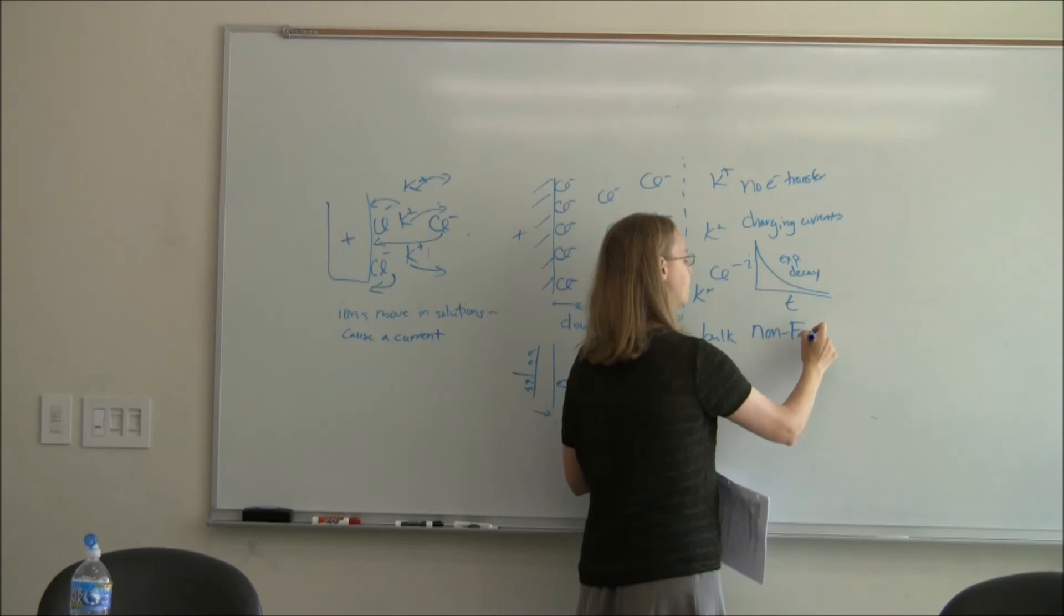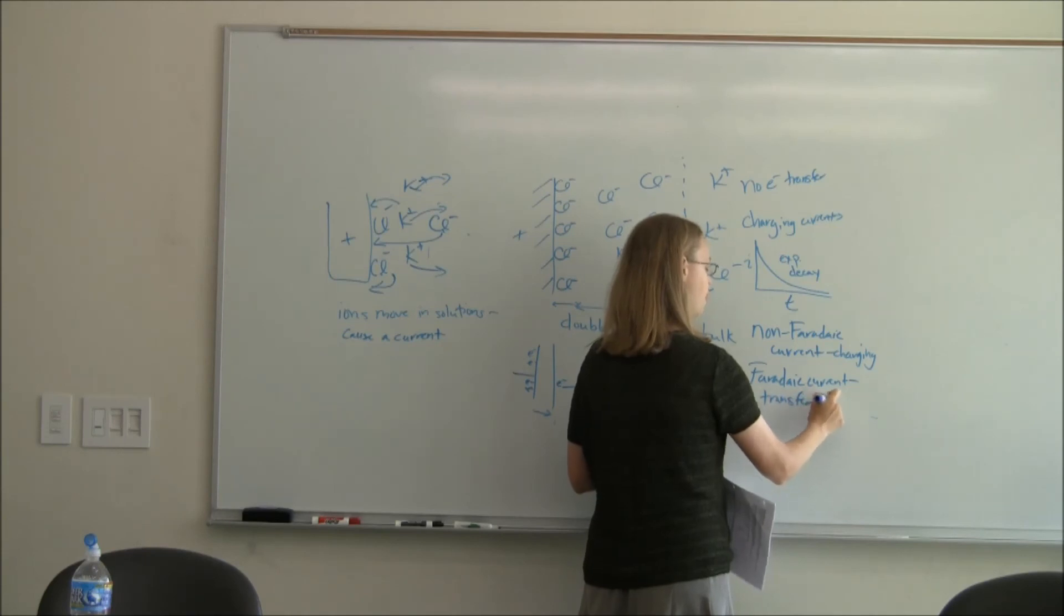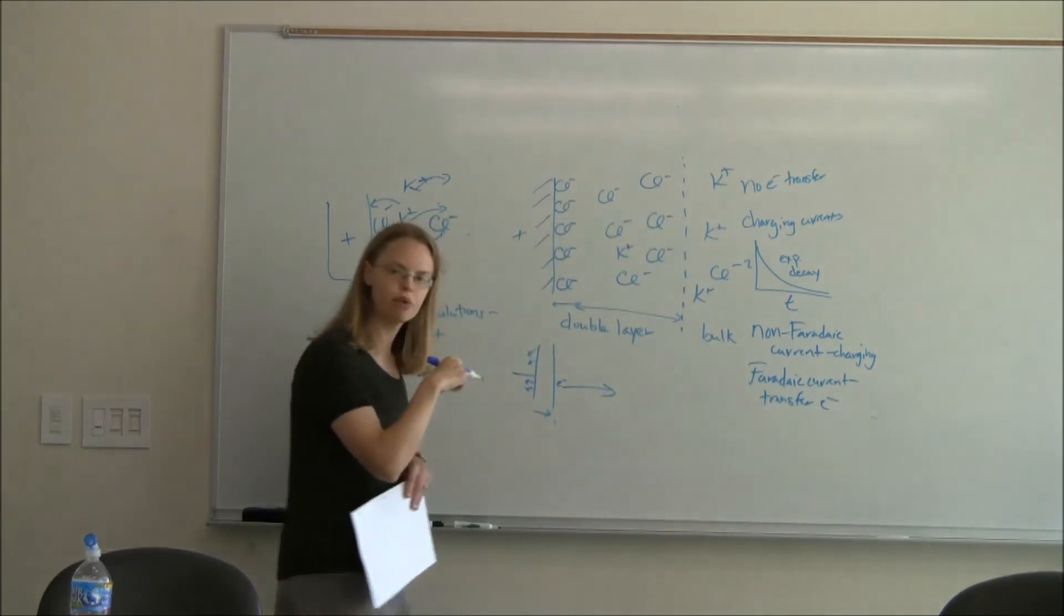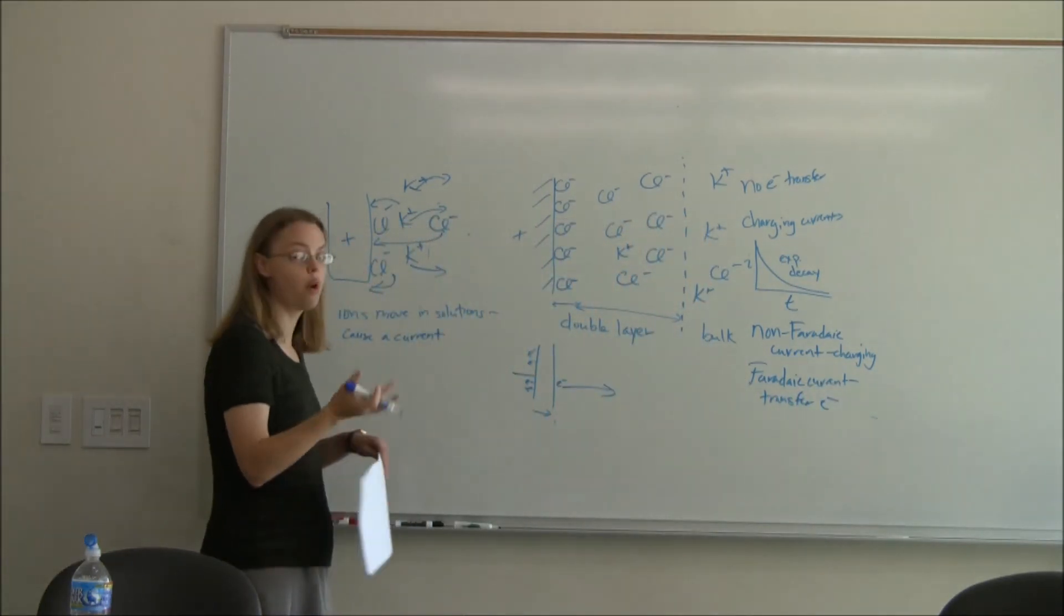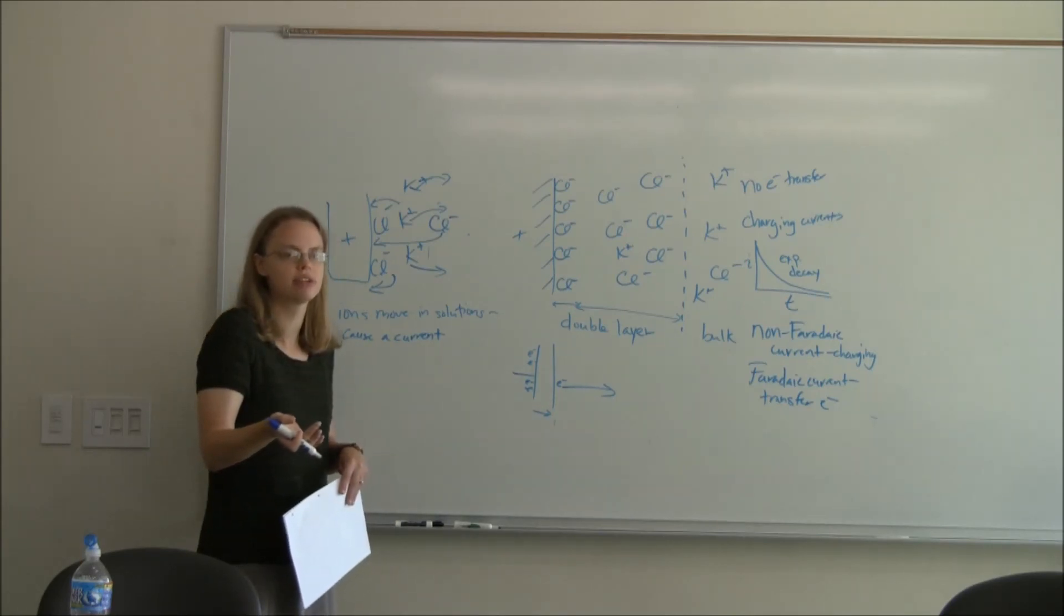It's very descriptive, right? Because faradaic current, that's our charging. Faradaic current was the transfer of electrons. So electrons going back and forth between the electrode. That was what we want to see. That's faradaic current. But unintentionally, we're going to get this background charging current.